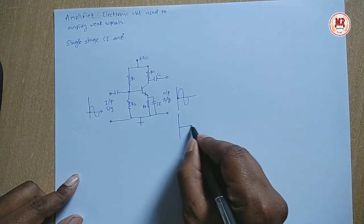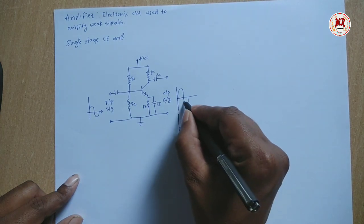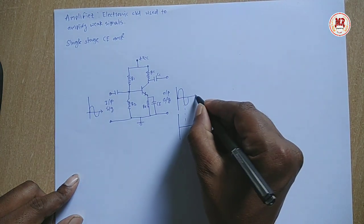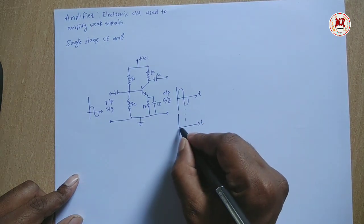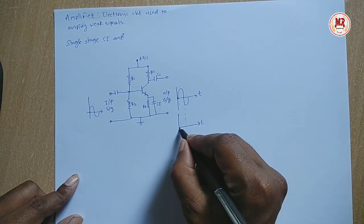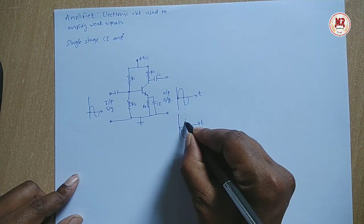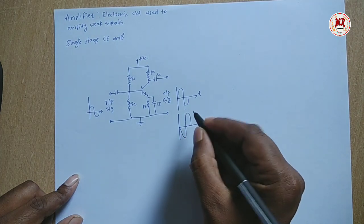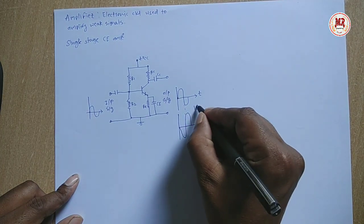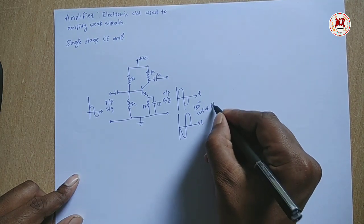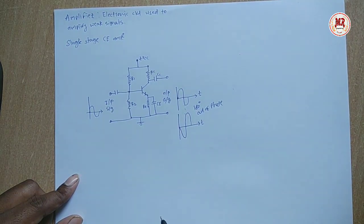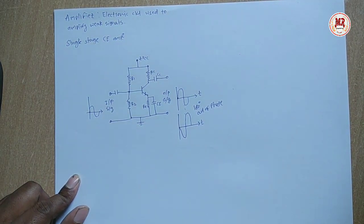Now this is the output waveform of amplifier. The property of transistor is to introduce 180 degree phase shift to the input signal. This is the output signal. This input and output signals are 180 degree out of phase.